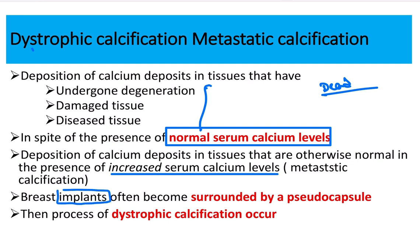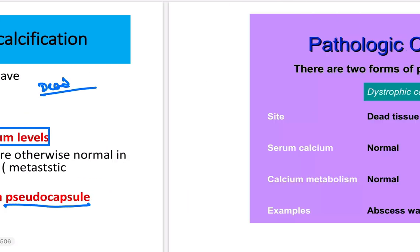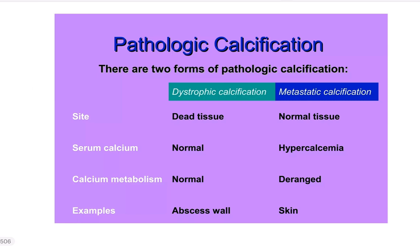Now, is a breast implant living or dead? The implant is dead material. Since it is dead, dystrophic calcification develops. The breast implant is surrounded by a pseudo capsule, and there is deposition of dystrophic calcification around it.